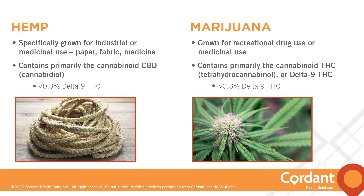Hemp contains more CBD and less THC. It is legal to grow and is specifically grown for industrial or medicinal uses such as papers, fabrics, and medicines. In fact, when the Chinese invented paper it was made from hemp, and before cotton was invented hemp was a main source fabric for clothing. Marijuana, on the other hand, is defined by containing delta-9 THC at greater than 0.3 percent, has much more THC than CBD, and is grown for recreational drug use and medicinal purposes. Marijuana is still Schedule 1 federally, so illegal at the federal level, though individual states have varying degrees of regulation.